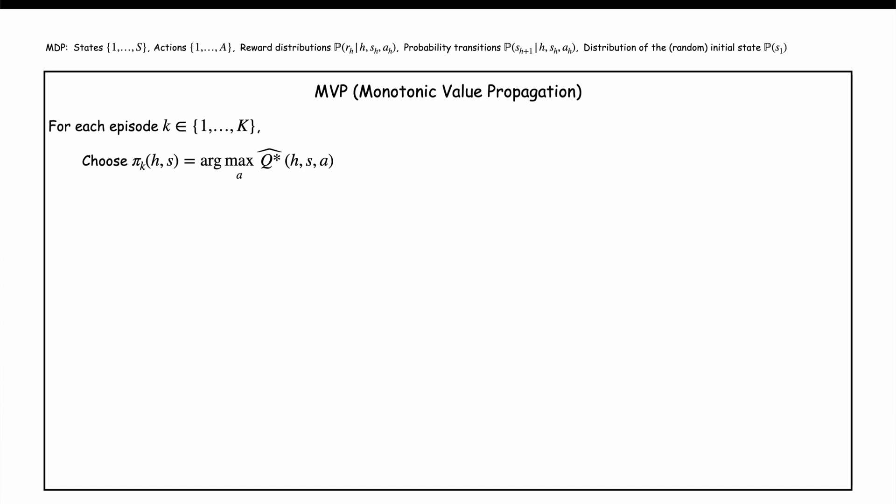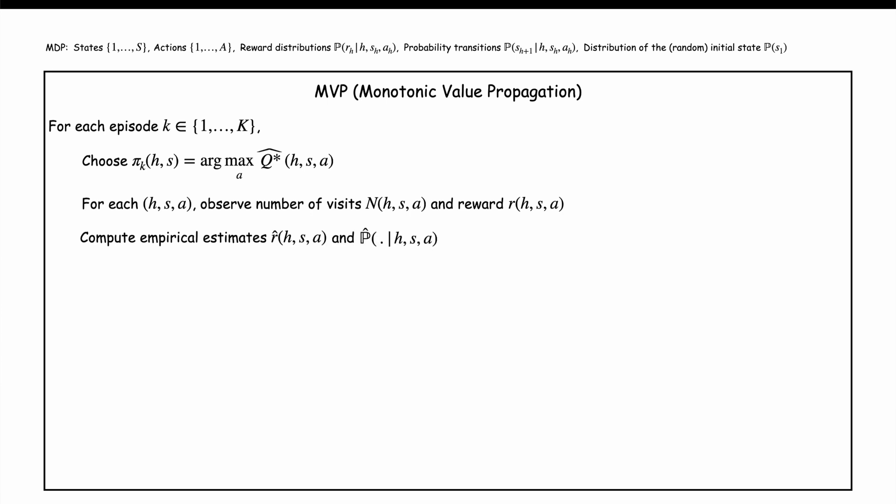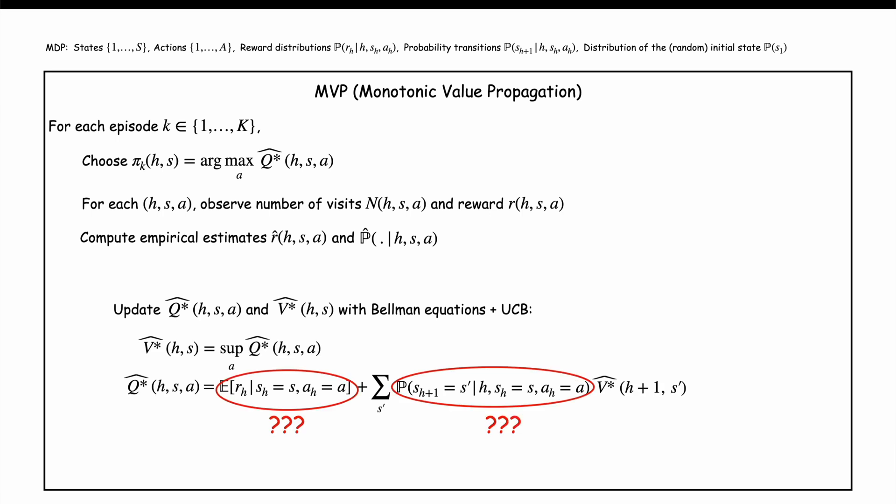With that, we have empirical estimates of the rewards and probability transitions. Now, we can use Bellman equations, those ones, to estimate the optimal value and q function. In those equations, we don't know the rewards and probability transitions, but we can replace them by their empirical estimates plus an optimistic bonus for exploration. That's UCB.